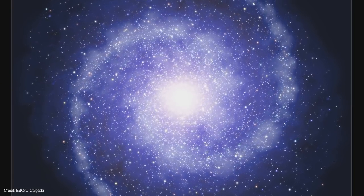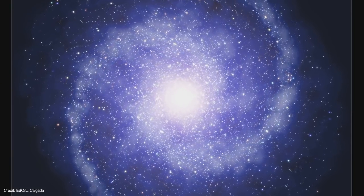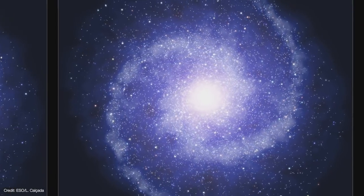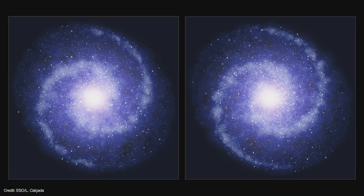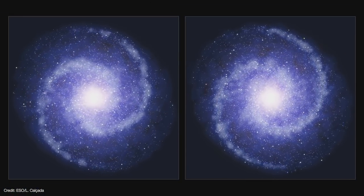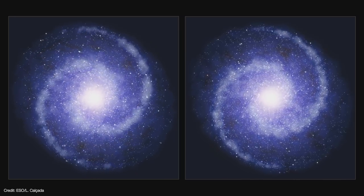If our galaxy didn't have any dark matter, stars would travel slower the farther away from the center they are. Instead, stars in our galaxy orbit at pretty much the same speed everywhere in the disk and halo.